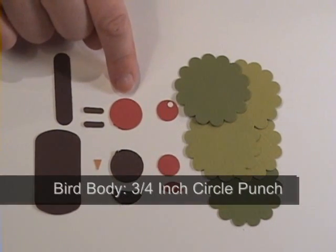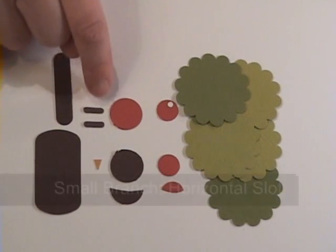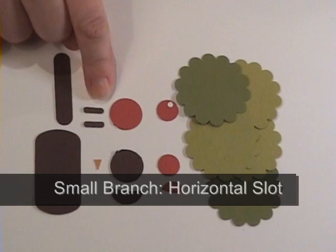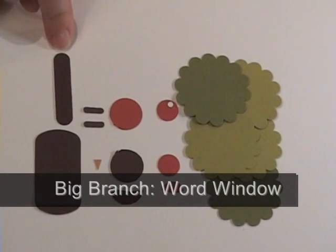A three quarter inch circle punch for the bird body. I have two of the horizontal slot punches for branches on our tree. And a word window in chocolate chip for the branch on the tree.